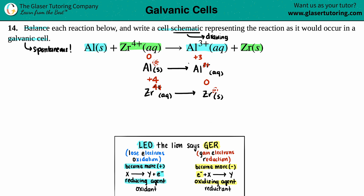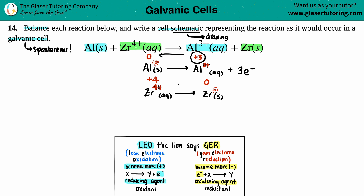Remember, you always add electrons to the more positive side because electrons are negative. For the aluminum half-reaction, going from zero to plus three — plus three is more positive, so we add three electrons on the right side. For the zirconium half-reaction, plus four is more positive than zero, so we add four electrons on the left side. From four to zero, that's four jumps — so we add four electrons.